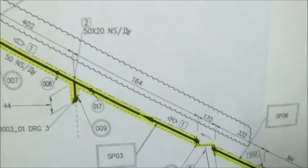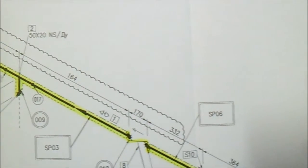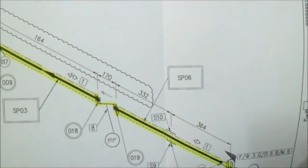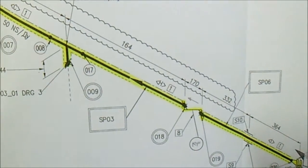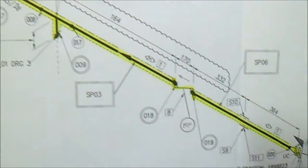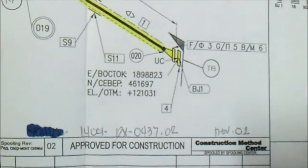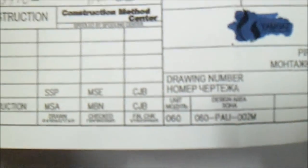So this is how to read the isometric. All levels here from the isometric you must check if you are going to fit up or if you are going to do erection in the pipe rack. Check the northing, the elevation, and also the area.